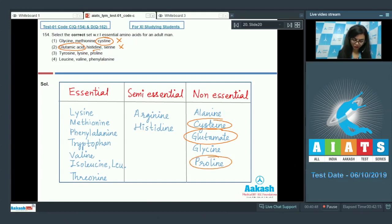And option four, leucine, valine, and phenylalanine—these are all essential amino acids, making this the correct option. The answer is four.